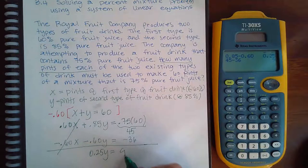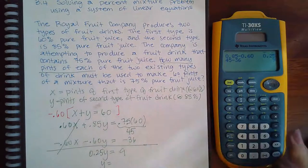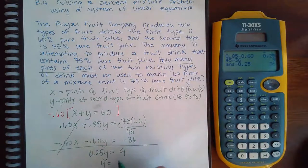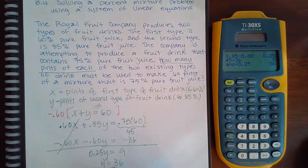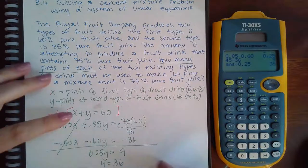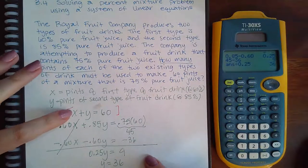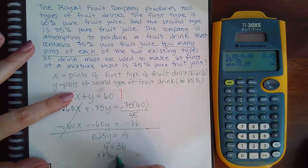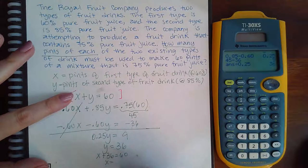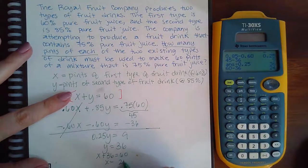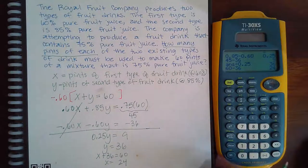So then if I solve for y, I'm going to do 9 divided by 0.25 and I get 36, so I know how many pints of the second type of fruit juice I need. If I want to figure out the number of pints for the first one I need to plug that back in, so x plus 36 equals 60. All I need to do is 60 minus 36 and I get 24.